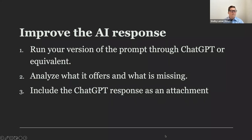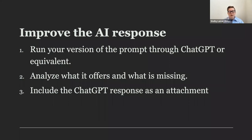One assignment idea is to improve the AI response. Run your version of the prompt through ChatGPT or the equivalent, analyze what it offers and what it's missing, and include the responses as an attachment. This is how you can have your students interact with the AI in a way that gets them practiced at making prompts but also responding to its limitations. If you want your students to write a simple essay on a topic, have them run a prompt through ChatGPT, include the response, and then respond to it with what is missing from the AI. You can have them do one round of prompts or multiple rounds.